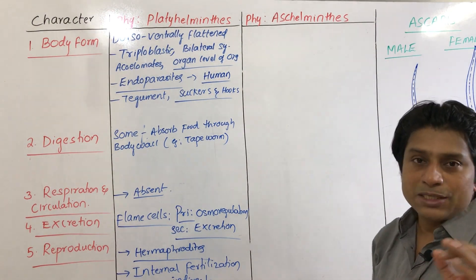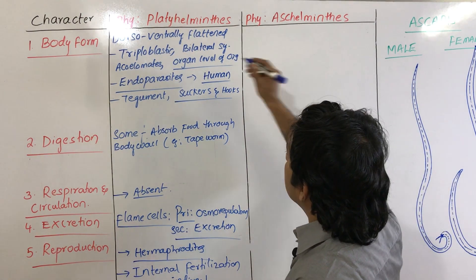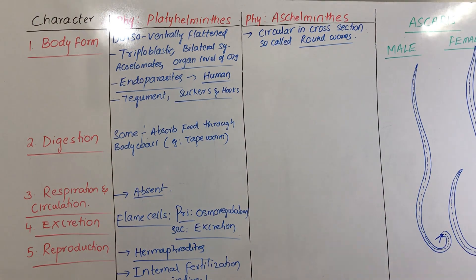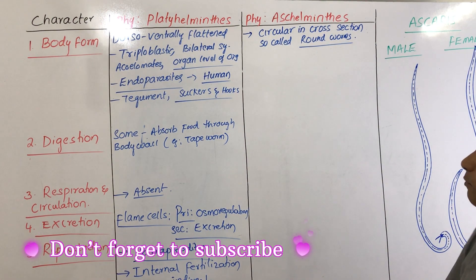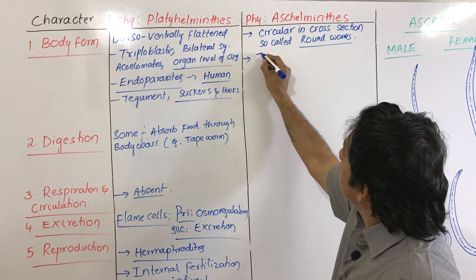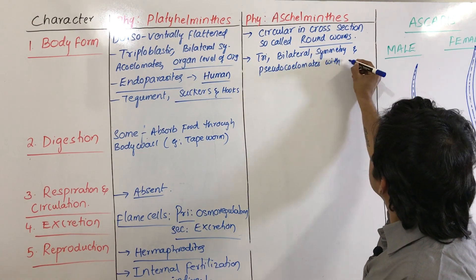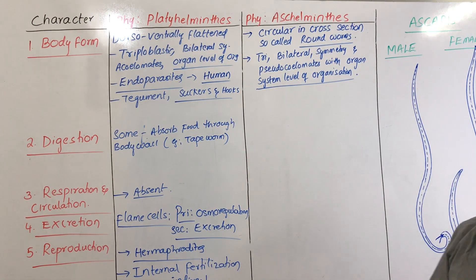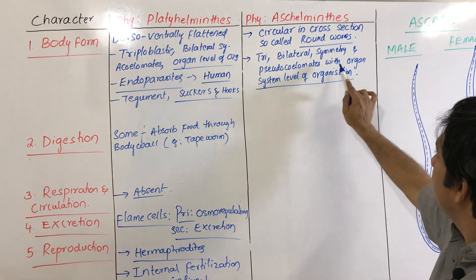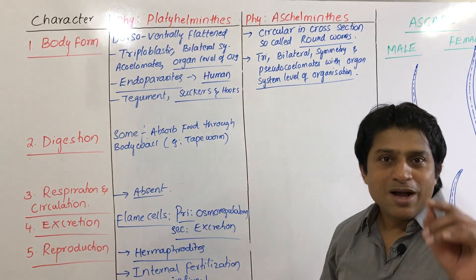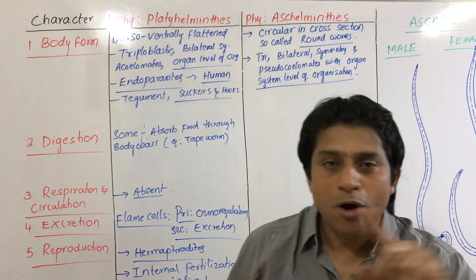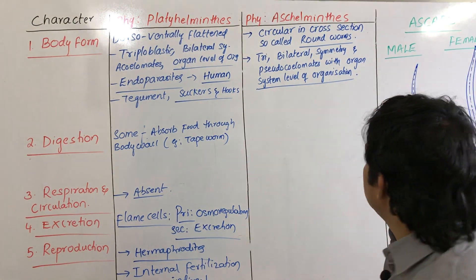Now coming to Aschelminthes — they are called round worms because they are circular in cross-section, unlike flat worms which are dorsoventrally flattened. All Aschelminthes are triploblastic with bilateral symmetry and are pseudocoelomates — not acoelomates but pseudocoelomates — with organ system level of organization. This highest level of organization starts from Aschelminthes.